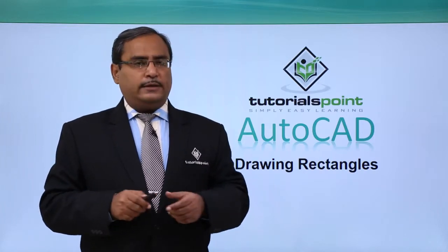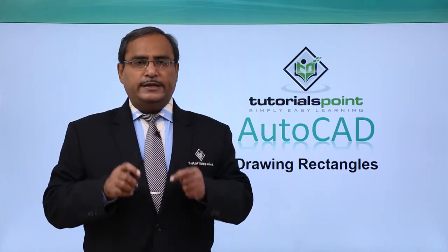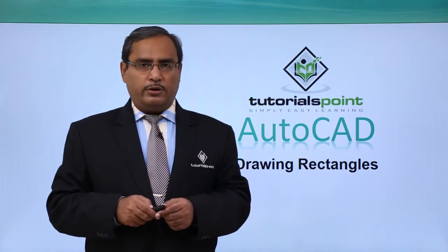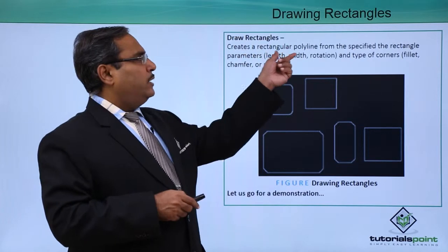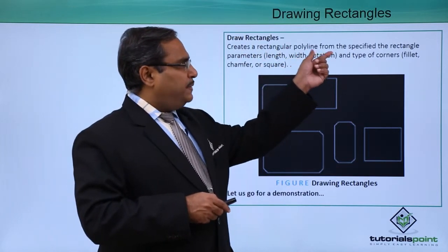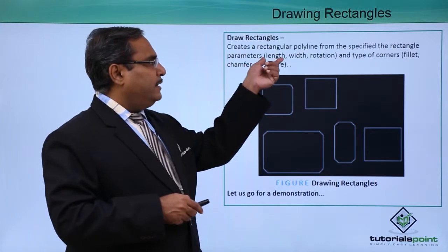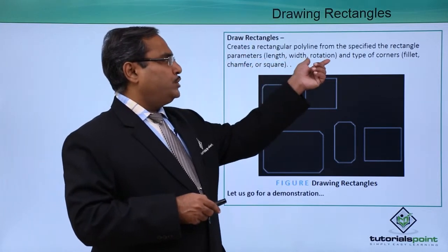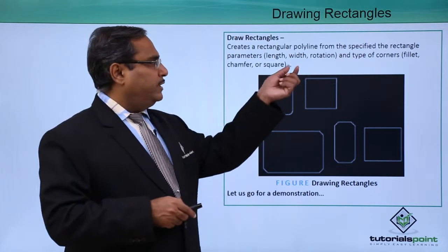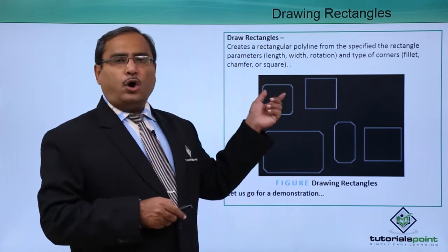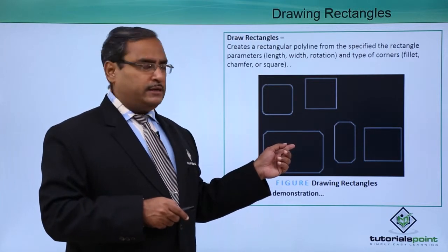Drawing rectangles. In this session, we shall discuss how to draw rectangles in AutoCAD. It creates a rectangular polyline from the specified rectangle parameters — that is, length, width, rotation, and type of corners. The corners can be of the type fillet, chamfer, or square. In this way, we can draw different kinds of rectangles.